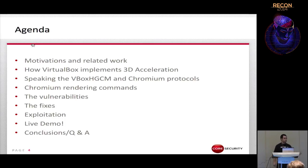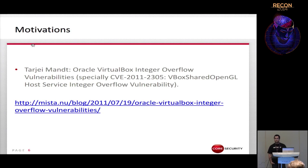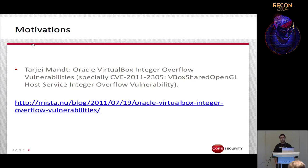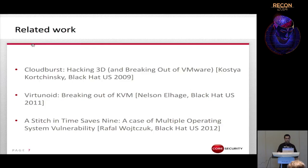The main motivation for this work was a blog post by Tarje Mant who described memory corruption vulnerabilities affecting the 3D acceleration feature of VirtualBox. After reading that post I decided to keep working, trying to find vulnerabilities in this code and exploit them to escape from the VM. There is also a brief and incomplete list of related presentations describing attacks against hypervisors like VMware, KVM, and Xen.